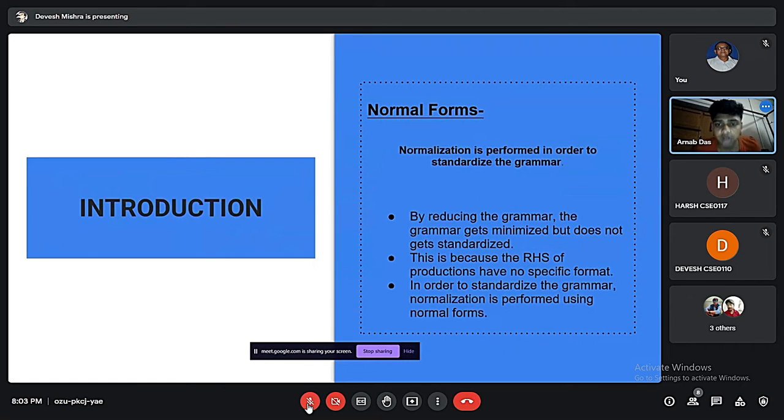Normal Forms is performed in order to standardize the grammar. By reducing the grammar, it gets minimized but does not get standardized. This is because the RHS of productions have no specific format. In order to standardize the grammar, normalization is performed using Normal Forms.